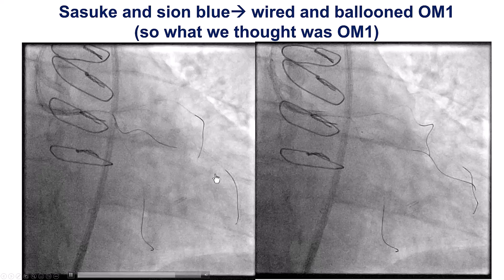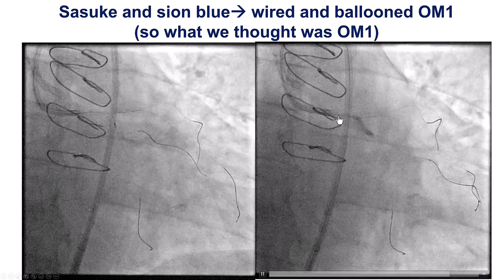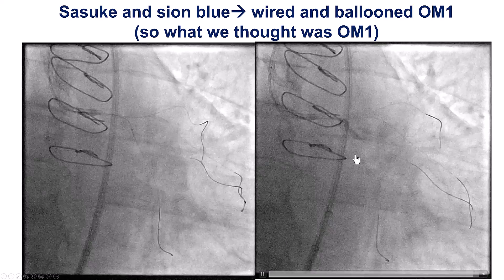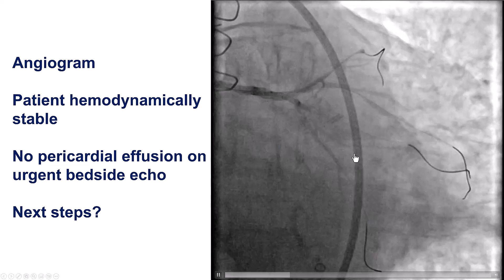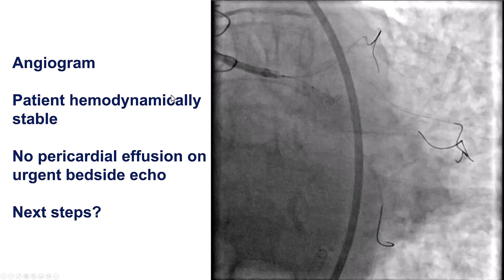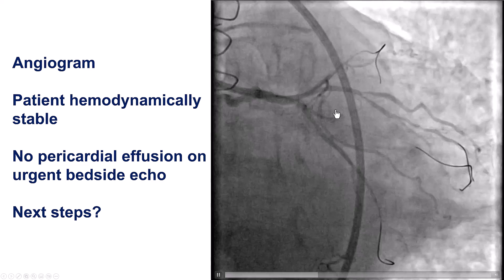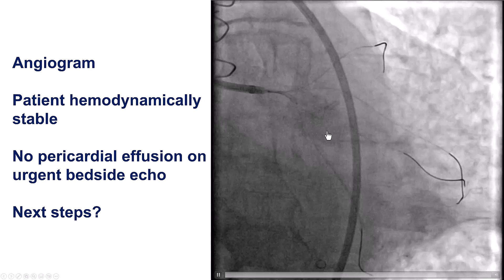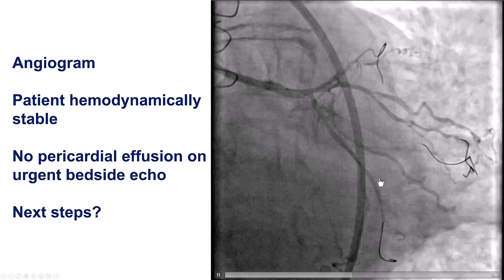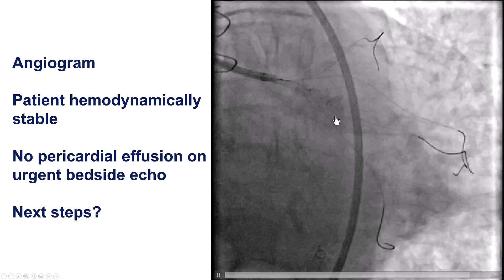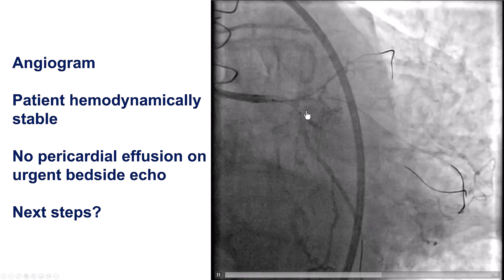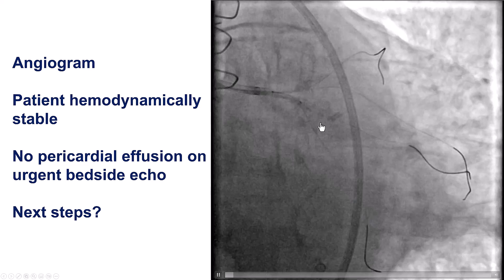We could see the wire going, and we decided to perform a balloon inflation into that first OM. Unfortunately, that was a problem. It turns out our wire was not actually in the OM — the OM has a more inferior course — but instead was likely in a very small branch, and after ballooning, we now had extravasation.